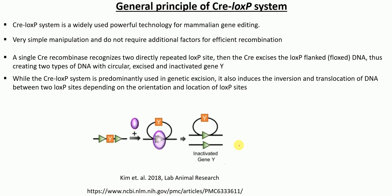What is the general principle of the Cre-LoxP system and why is it widely used? Because it is a powerful tool for mammalian gene editing. The most important reasons are that it involves very simple manipulation and does not require additional factors for efficient recombination. A single Cre recombinase recognizes two directly repeated LoxP sites.